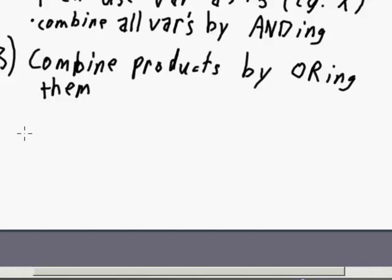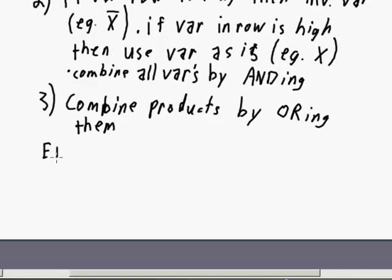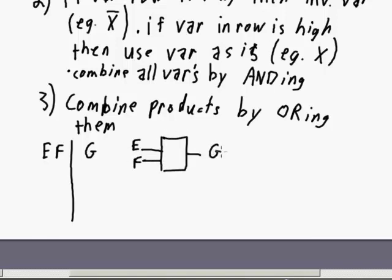So one more simple example. Let's say we've got a truth table here, just a two input, two variables, E and F, and we've got some output G. So we've got E and F going into some black box and outputting G.